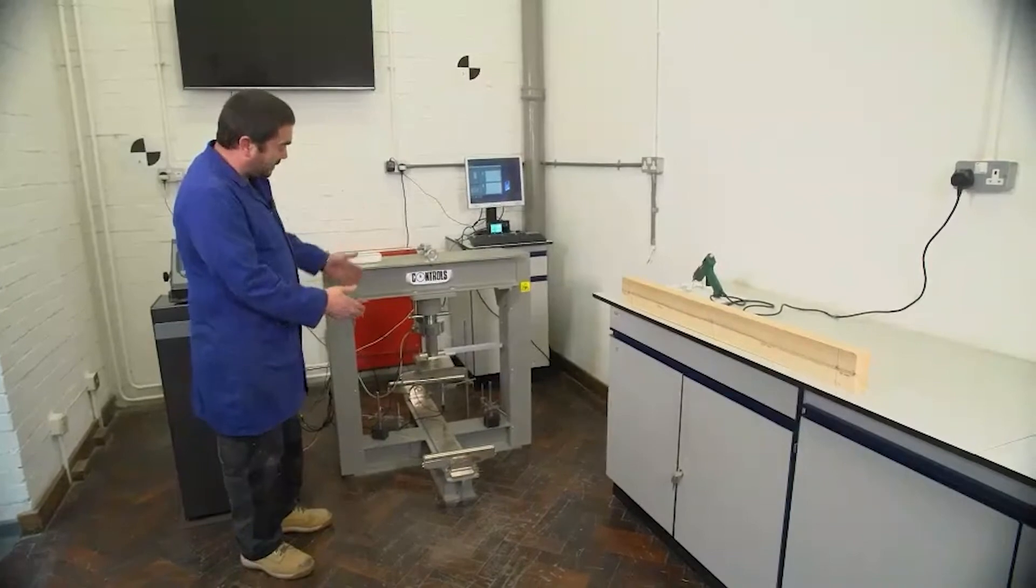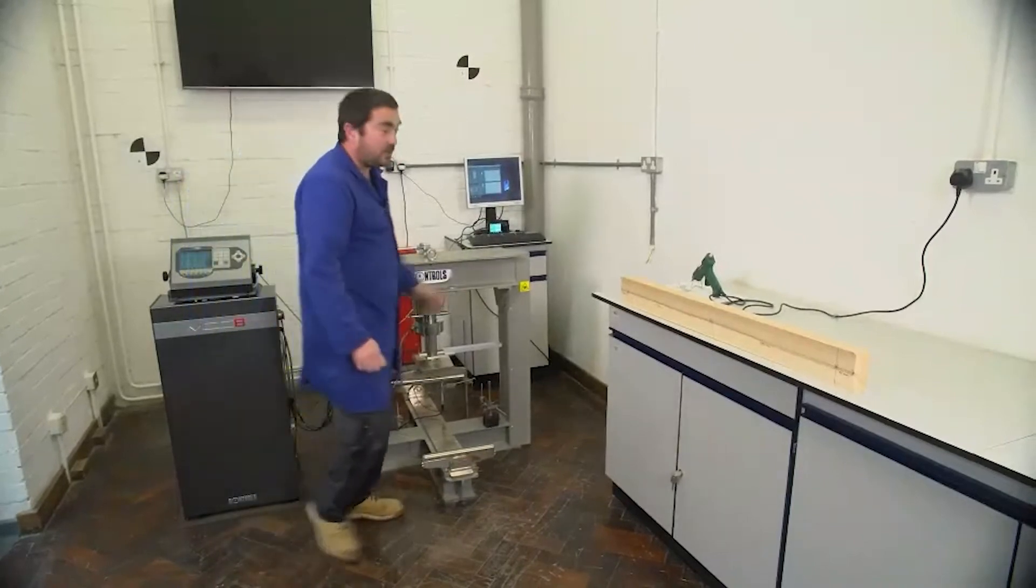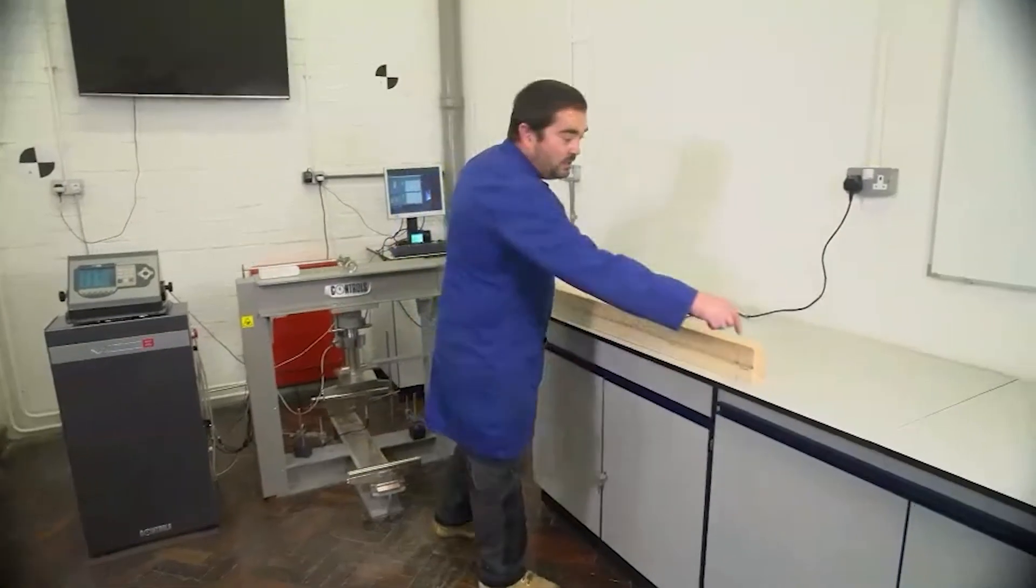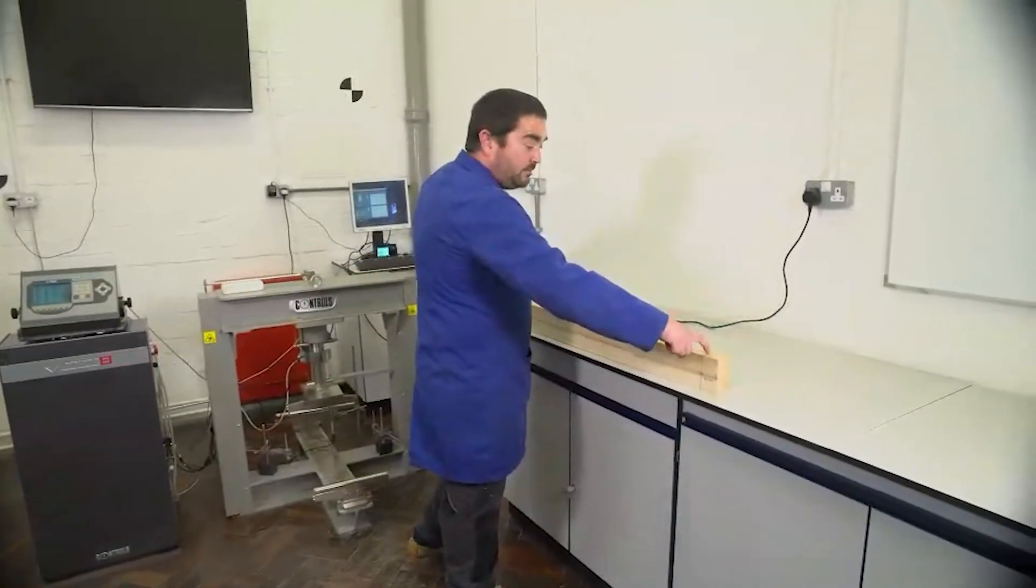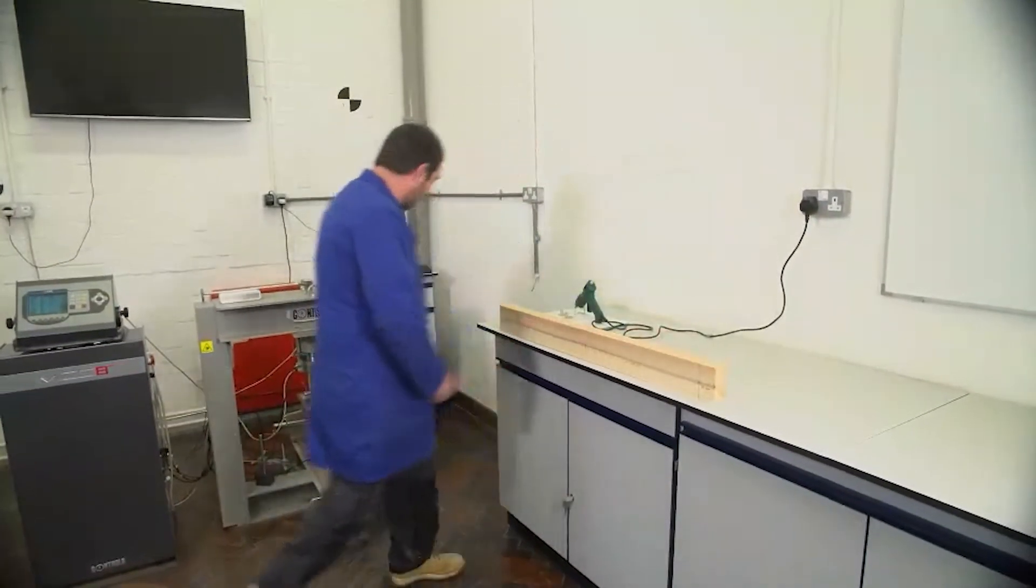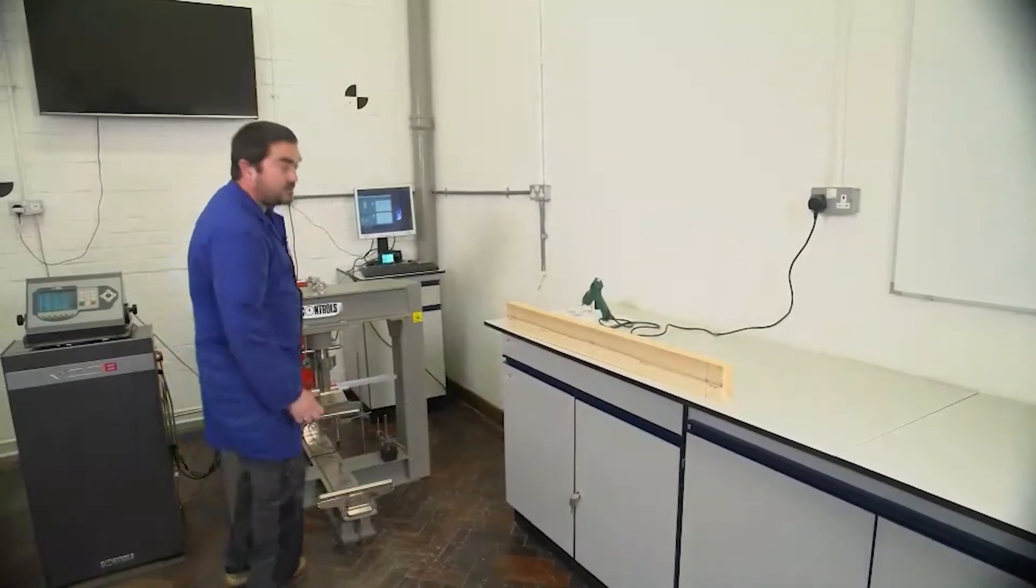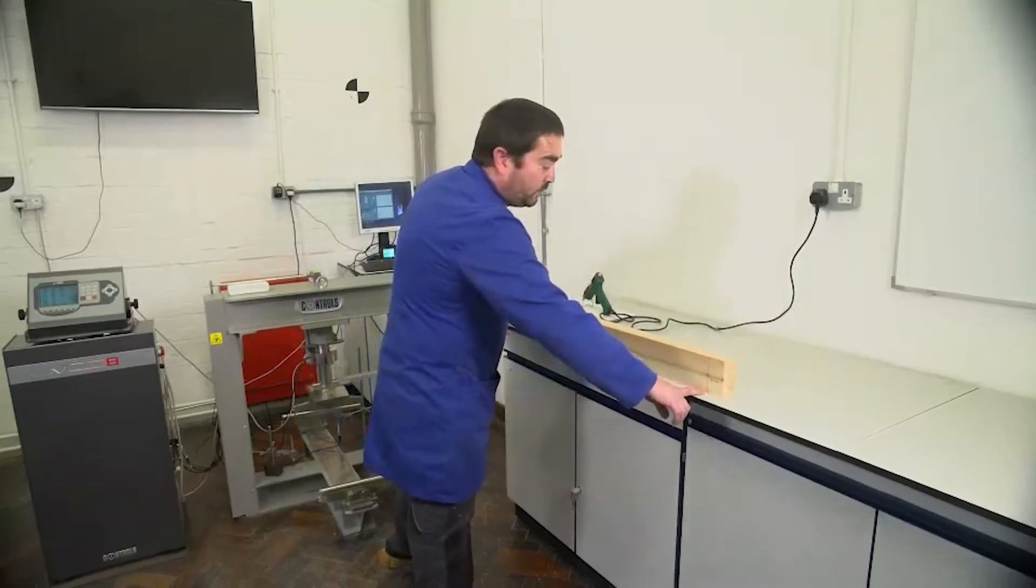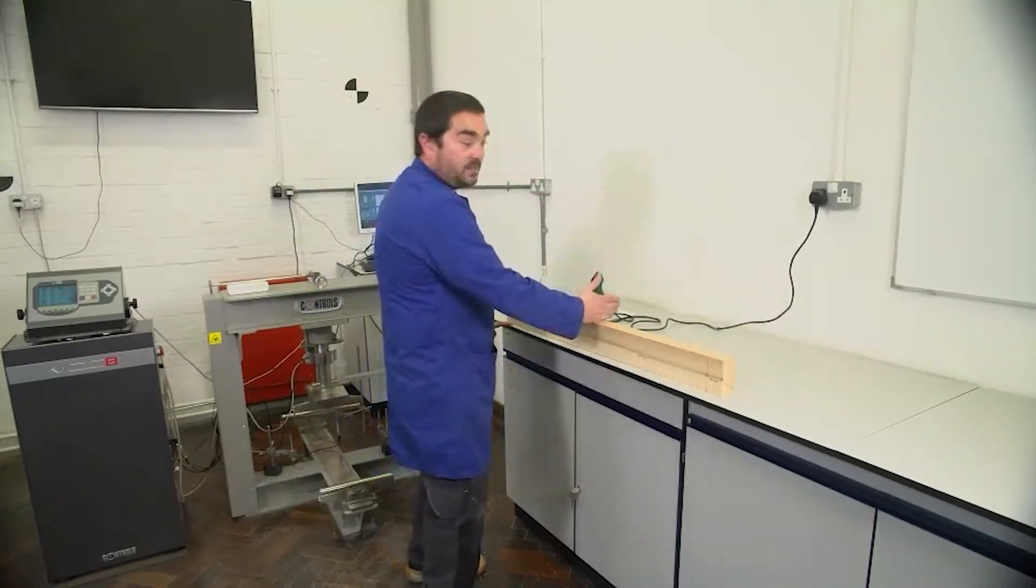We've set it for 900 millimeters. So if we have a look at our timber sample that we're going to be using, we've got 900 millimeters marked up on here. So when we put this down onto the testing machine, we're going to have one support there, one support here, and we're going to be loading it in the middle.